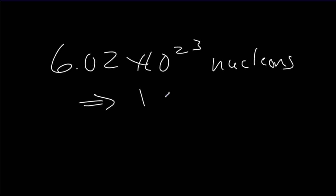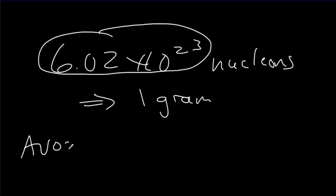So, if we have 6.02 times 10 to the 23rd nucleons, then we get a mass of 1 gram. This number here has a special name. It's called Avogadro's number or Avogadro's constant. And we usually give it the symbol Na.